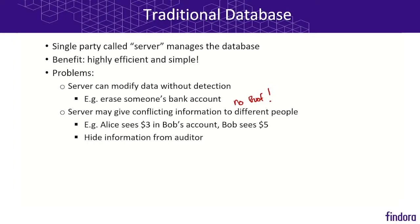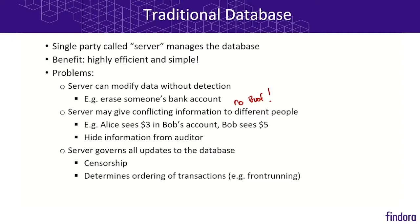The server may also give conflicting information to different people — the bank could tell Alice that there are only three dollars in Bob's account while Bob thinks he has five. Similarly, the server could hide information from an auditor. The server governing all updates could also censor transactions, blocking specific users from accessing or making changes. It could also determine the ordering of transactions — in an exchange, giving preference to particular users to go before others could lead to financial gain and is in some cases illegal. This is known as front running.